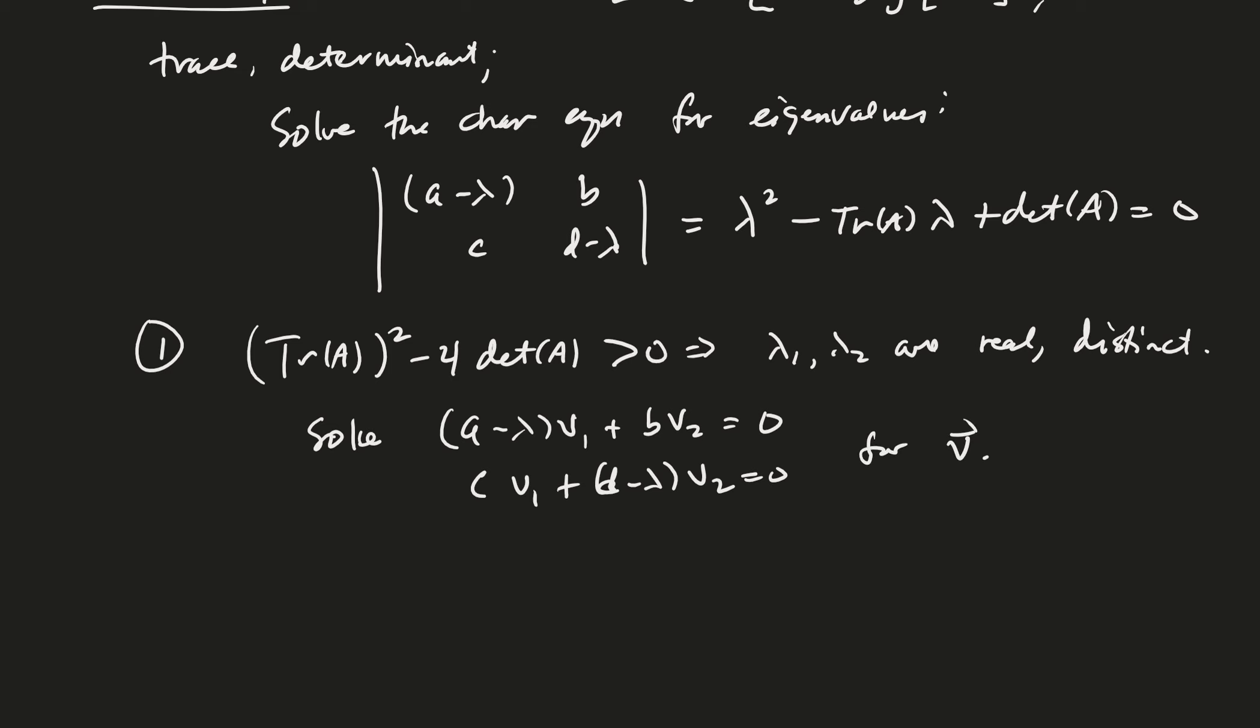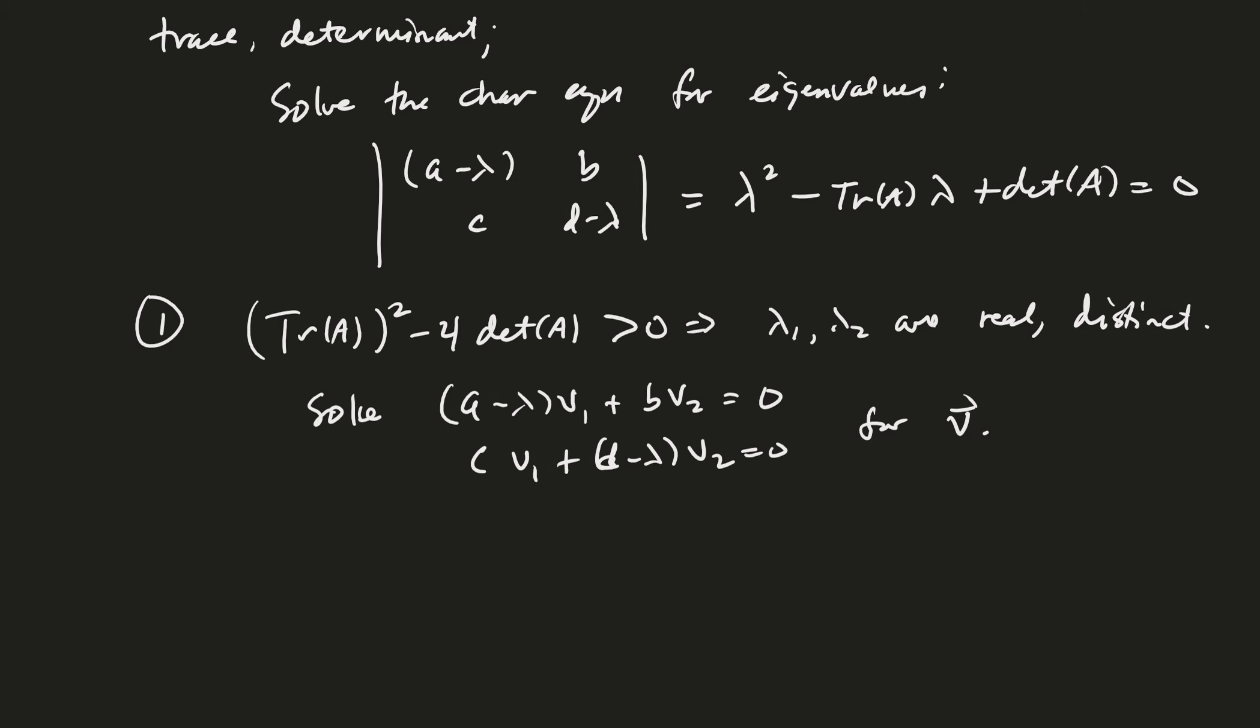And you do that for each lambda, right? Oops. Then when you do that, I forgot to summarize my solution. What is the solution, then? X of t is equal to c1 e to the lambda 1 t, V1 plus c2 e to the lambda 2 t, V2. Good.